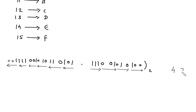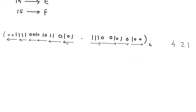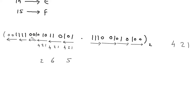From the binary point going left: the first group gives 4 plus 1 = 5. The next group gives 4 plus 2 = 6. The next gives 2. Then 1. Then 4 plus 2 plus 1 = 7. Then the last group gives 1. So the integer part of the octal number is 1, 7, 1, 2, 6, 5.